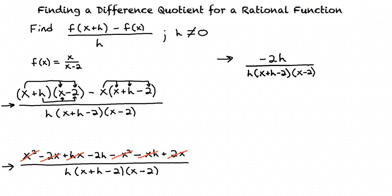Can we cancel out an h from both the numerator and denominator? Yes, we can. Good observation. We cancel the h, and our final answer is negative 2 over x plus h minus 2 times x minus 2.